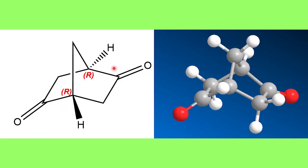This is another molecule. Again in this molecule there are two chiral centers. This is a cyclohexane ring which also has a bridge, so these compounds are generally called bicyclic compounds. You can clearly see that there are two chiral centers, so this molecule will also show stereoisomerism.